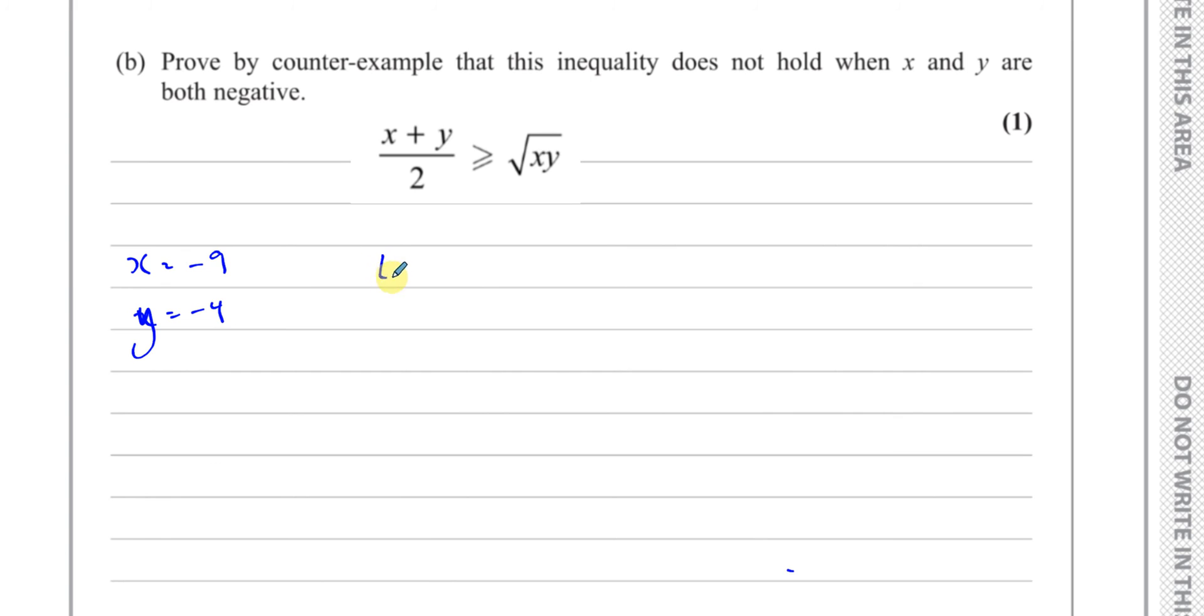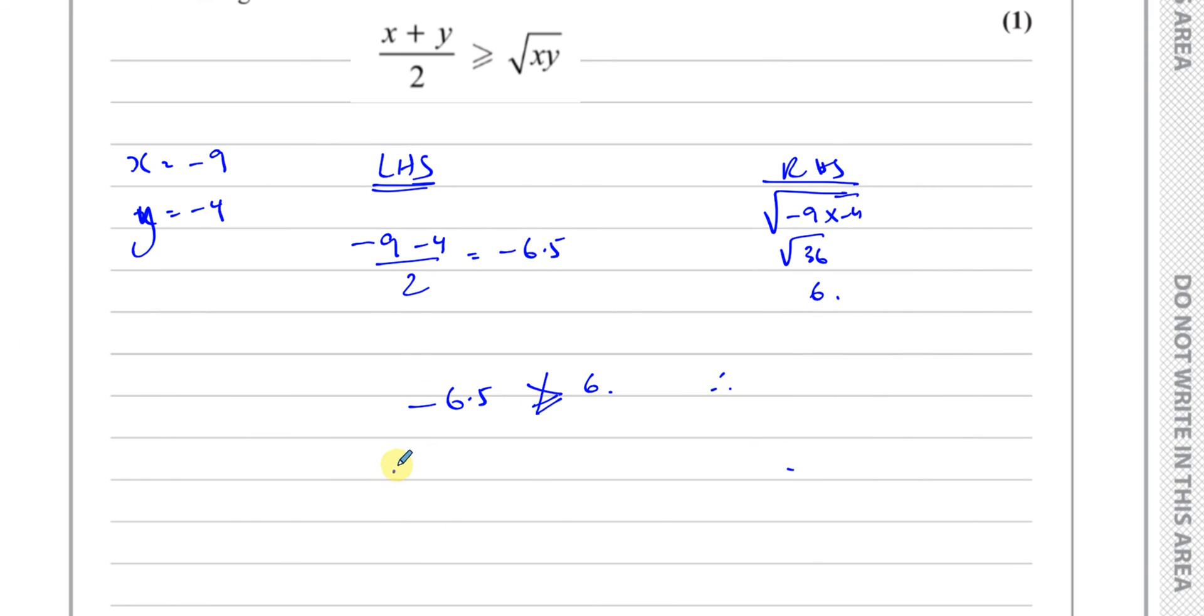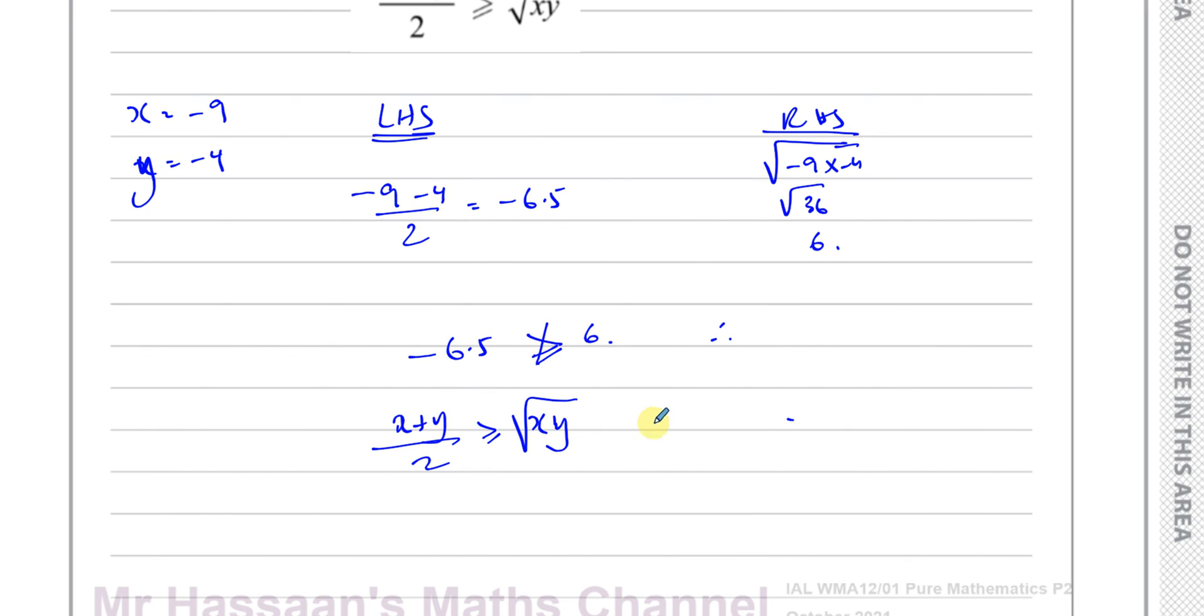So if I put inside, I'll say the left-hand side of the inequality, you're going to say negative 9 minus 4 over 2, which gives you negative 6.5. And the right-hand side of the inequality is the square root of negative 9 times negative 4, which is the square root of 36, which is 6. And negative 6.5 is not greater than 6. Therefore, we can say that x plus y over 2 is greater than xy is not true, is not true.